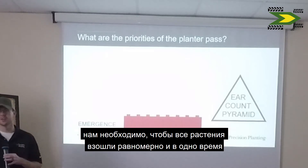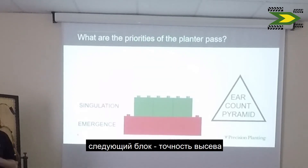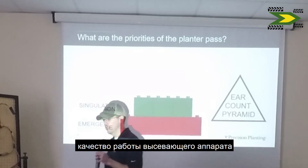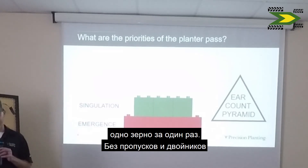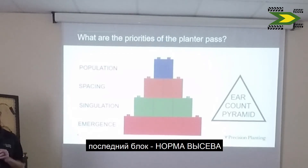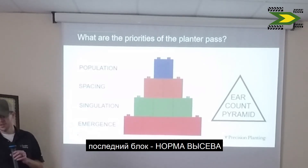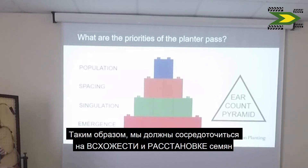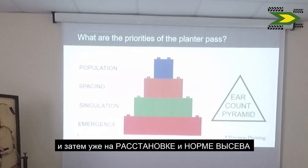We need all of the corn plants to come up out of the ground at the same time and have even emergence across the field. The next building block is singulation — one seed every time, not skipping a seed and not having doubles. The next building block is spacing. And then the final block of the yield count pyramid for highest yield is population. The most important thing to focus on and get right first is emergence, then singulation, then spacing, and finally population.